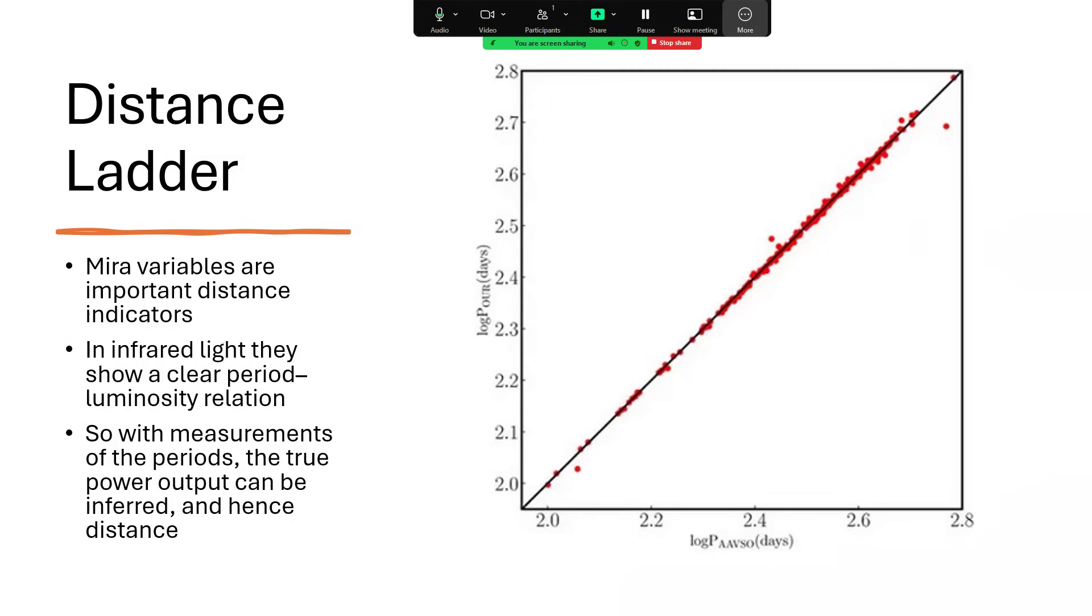And if we compare that with the apparent brightness, then we can use the standard candle rule that if it's twice as far away it'll be a quarter as bright and work backwards to get the distance. So we do this with Cepheid variables very famously, but Mira variables are also turning out to be very important and perhaps a little easier because there are quite a lot of them.